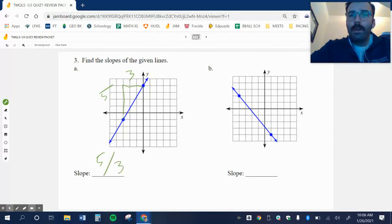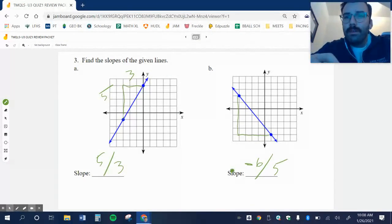This one, I'm going to go down first, which tells me my slope should be negative. I'll go down 1, 2, 3, 4, 5, 6, and right 1, 2, 3, 4, 5. Let me double check that. 1, 2, 3, 4, yeah, 5. So it should be negative 6 over 5.